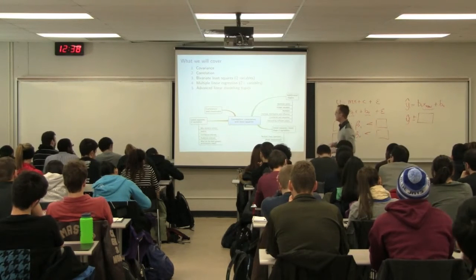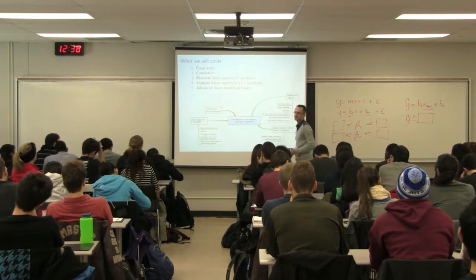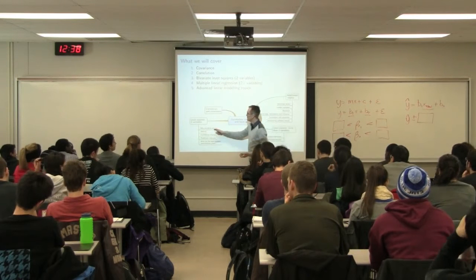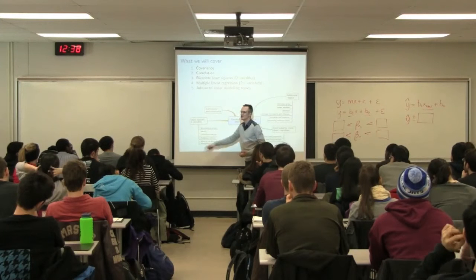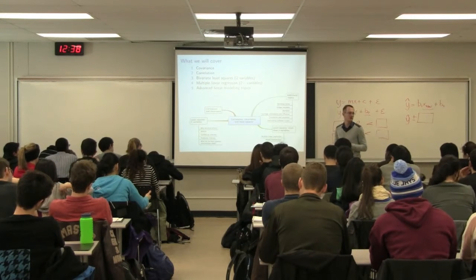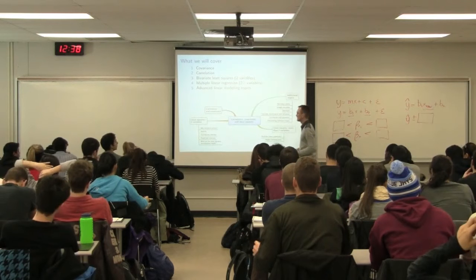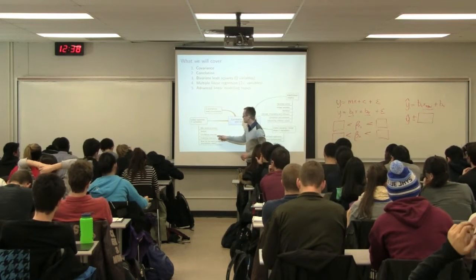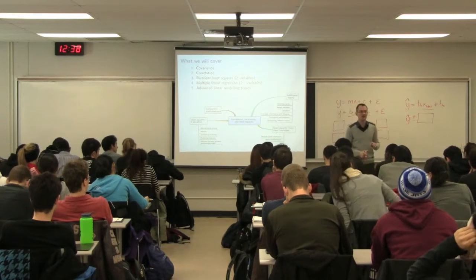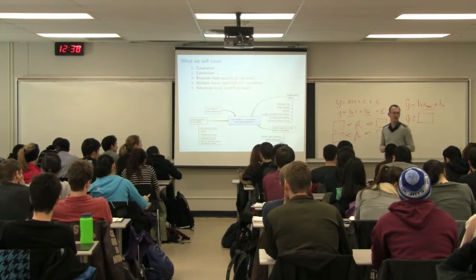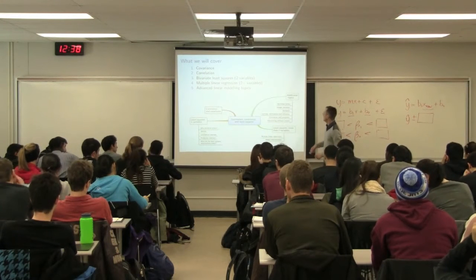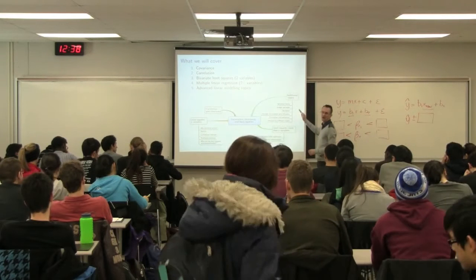Quick overview: today we'll cover covariance and correlation and introduce the least squares model. Then we'll look at why we minimize errors, and come to ANOVA — what it means and how to interpret it, which is the key to understanding R-squared. We'll cover that carefully in Friday's class. After the midterm break we get to constructing confidence intervals and prediction intervals, then look at what the least squares assumptions mean and what happens when those assumptions break down.